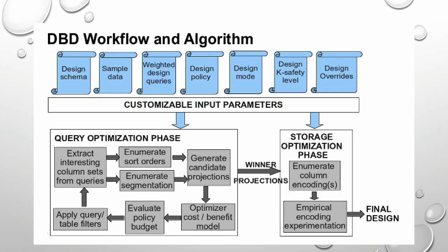The query optimization phase is probably the most interesting part of the DBD. It looks at the input query set and extracts what we call interesting column sets - columns that appear in certain places performing interesting functions, like join keys or group-by keys in a SQL query. We put these together in various ways to create sort orders, with the intention of sorting them to benefit as many queries as possible. We also enumerate segmentation - a projection is segmented by a hash on some set of its columns, which determines which node in the Vertica cluster a particular row winds up on.